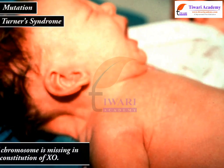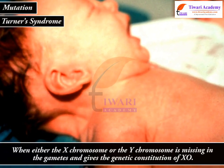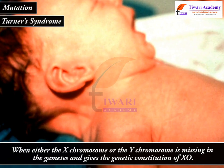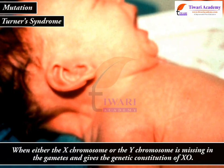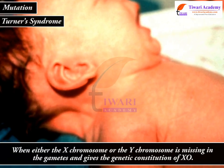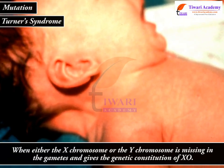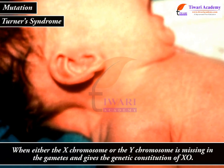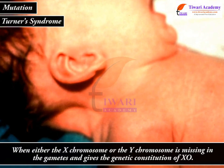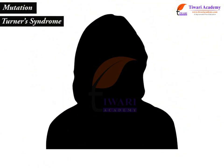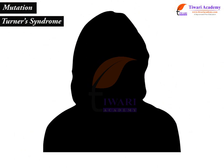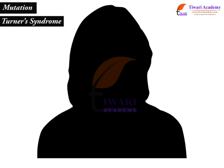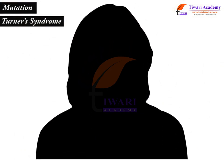Turner's syndrome occurs when either the X chromosome or the Y chromosome is missing in the gametes, giving the genetic constitution of XO. They are normally females who are infertile and cannot get pregnant, and they have underdeveloped sex characteristics.